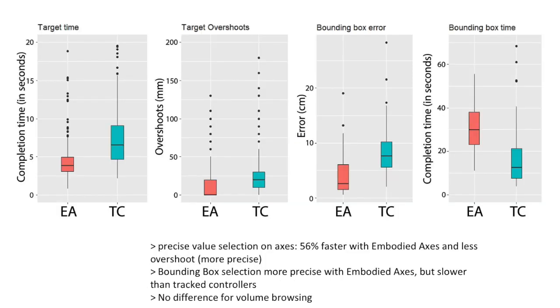We found that for precise selection, participants were 56% faster with Embodied Axis and were more precise. For the bounding box task, we found a trade-off between time and accuracy. People did more casual selections with the tracked controllers.